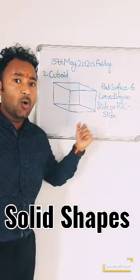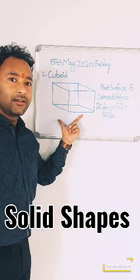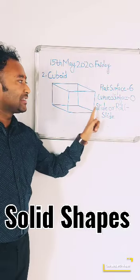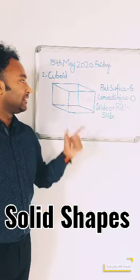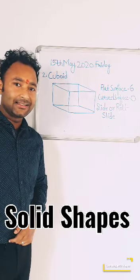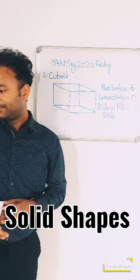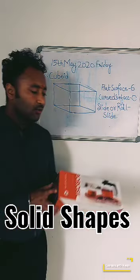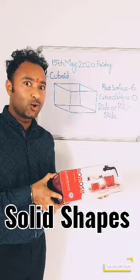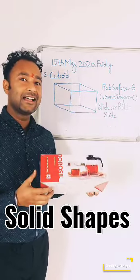Can you see any curved surface in the cuboid? You cannot see any curved surface, so the answer is 0. This shape will also slide, as it has flat surfaces. Can you see this box? Its length, breadth, and height are all different, so this is a cuboid. Homework: search how many cuboids and cubes are at your home.